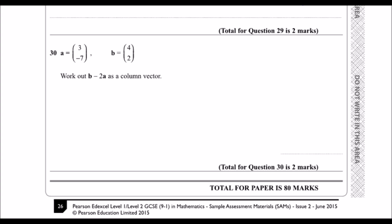And finally, question 30. So we've got A is 3 right and 7 down, B is 4 right and 2 up. Work out B minus 2A as a column vector.